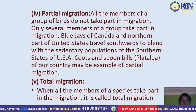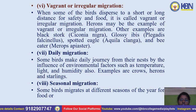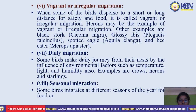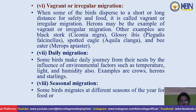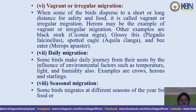Total migration occurs when all members of a species take part in migration. Vagrant or irregular migration is when some birds disperse to a short or long distance for safety and food. Herons may be an example of vagrant migration. Other examples are black stork, glossy ibis, spotted eagle, and bee eater.